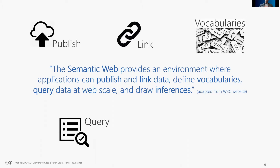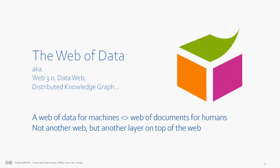The semantic web also enables querying data at web scale and drawing inferences — the ability to reason on data and infer new facts. Another term you may have heard is the web of data, which can have different names: web 3.0, data web, distributed knowledge graph. Knowledge graph is the more fashionable term now; web of data is a bit outdated. But they all refer to more or less the same thing.